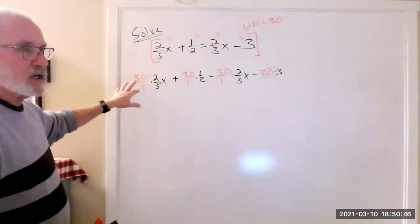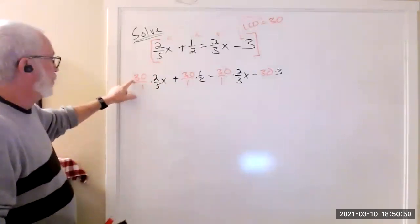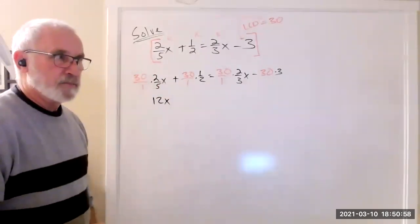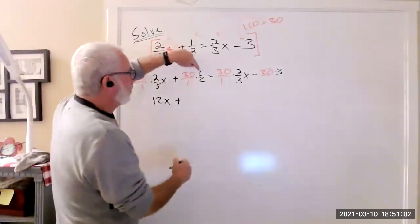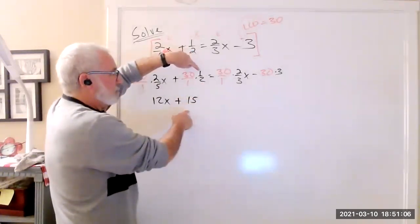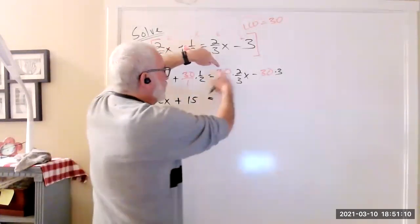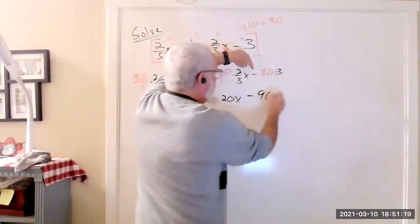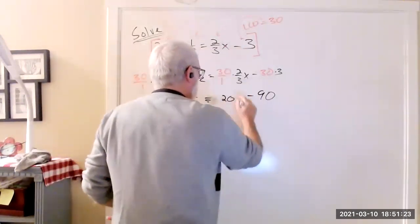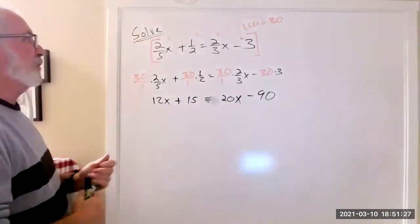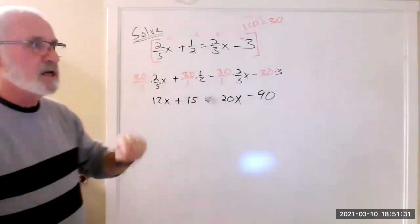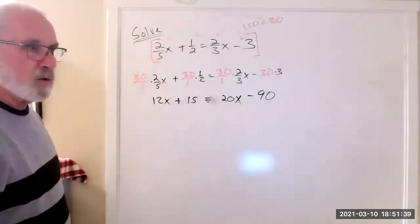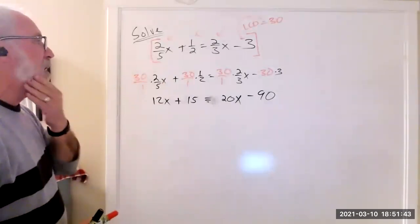Some of you know about cross canceling. When you do 30 times 2 divided by 5, you end up with 12x. Plus, 30 times 1 divided by 2 is 15, equals 30 times 2 is 60 divided by 3, which is 20x. And here there's no cross canceling, so it's just a big fat 90 — 30 times 3. The beauty of this technique is it gets messy for a second, but then all of a sudden there are no more fractions.